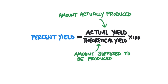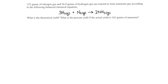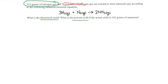Let's look at the previous problem again. 155 grams of nitrogen and 56 grams of hydrogen was reacted to form ammonia gas. What is the theoretical yield of ammonia gas, and what is the percent yield if the actual yield was 143 grams of ammonia? When the problem asks us to determine the theoretical yield, it's asking for the amount of ammonia produced when the limiting reactant is completely used up. We already determined that nitrogen was the limiting reactant.